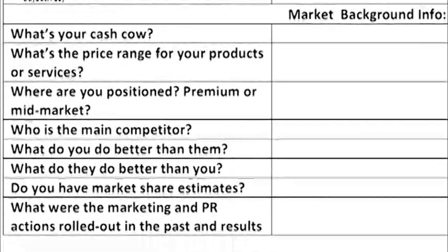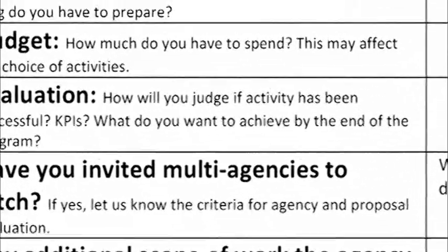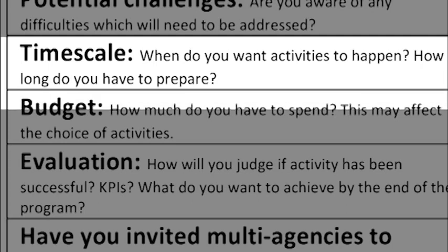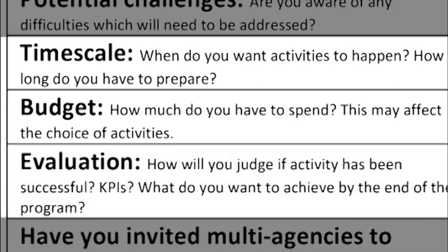Three of the most critical items for planning on the briefing sheet are: timescale — when do you want the campaign to take place and how long do we have to prepare; budget — how much do you want to spend, as this may affect the choices of activities; and evaluation — how will you judge if the activities have been successful, and what KPIs need to be achieved in the campaign.